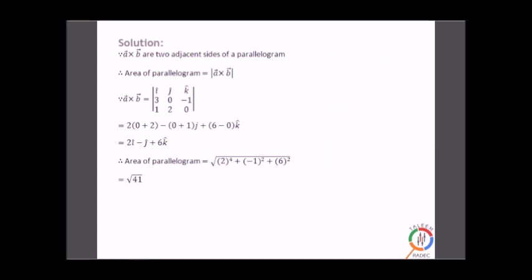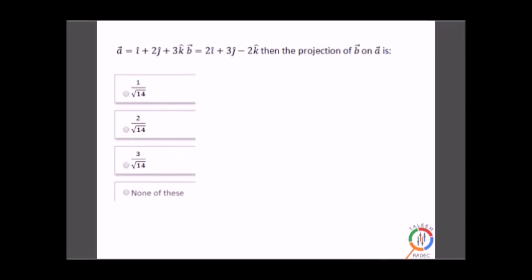We find the determinant of the matrix. From this we get a × b = 2i - j + k. The area of the parallelogram is the magnitude: √(2² + (-1)² + 1²) = √(4 + 1 + 1) — wait, expanding fully gives √41. So the area is √41, and this is our answer.